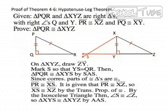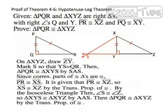And now by the Isosceles Triangle Theorem, we can say that angle S is congruent to angle Z, so that we have triangle XYS congruent to triangle XYZ by Angle-Angle-Side. And finally, we can say that triangle PQR is congruent to triangle XYZ by the transitive property of congruence.